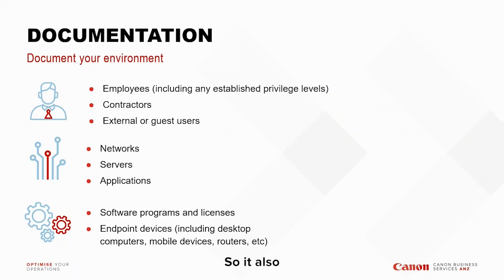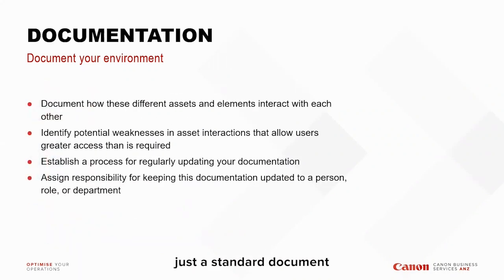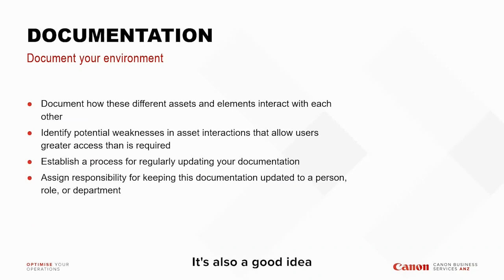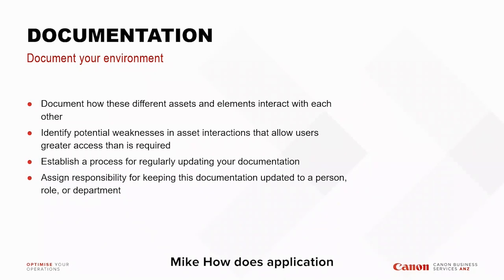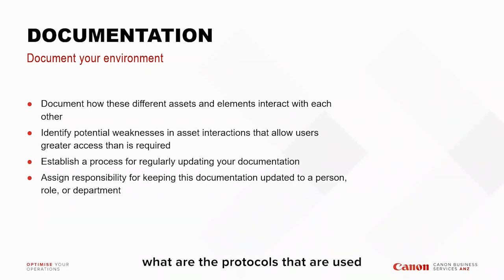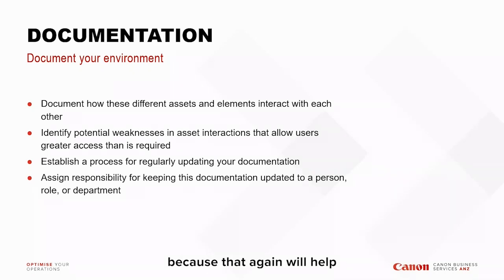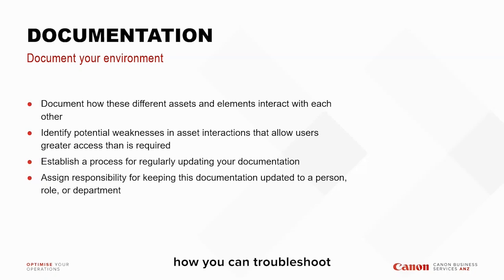Beyond documenting the environment itself, it's also important to document how assets and elements interact with each other. Identify any potential weaknesses in asset interactions that allow users greater access than is required. For example, how does application A talk to application B, C, or D? What protocols are used and what permissions are required? This helps identify where your potential weaknesses are and where you need to improve security or troubleshoot quickly in the event of an attack.